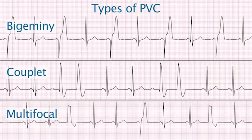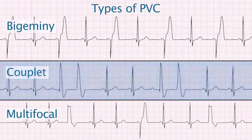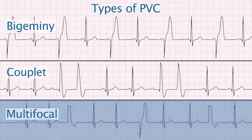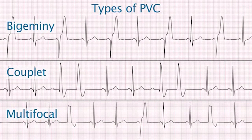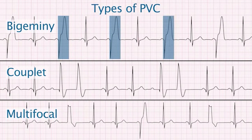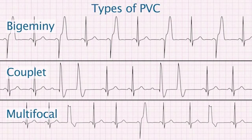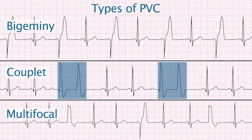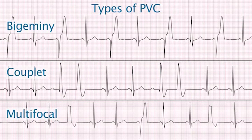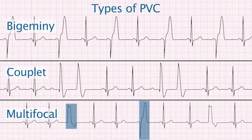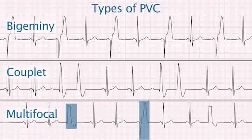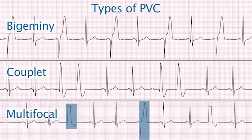There are several types of premature ventricular contractions. They include bigeminy, couplets, and multifocal PVCs. Bigeminy occurs when every other QRS complex is a premature ventricular contraction. A couplet is two premature ventricular contractions occurring together. Multifocal premature ventricular contractions occur when the PVCs originate from different locations within the ventricle or from both ventricles.